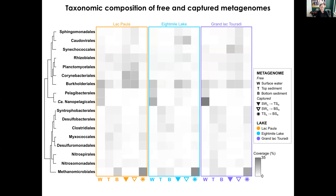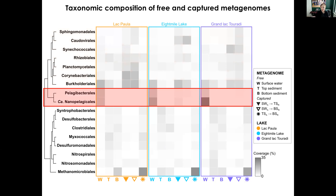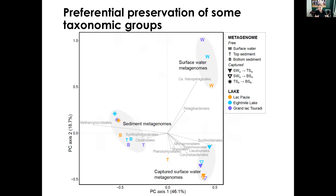Looking at microbial phyla is an extremely low resolution of taxonomic diversity, so we switched to order-rank taxonomic composition. At this finer resolution, groups represented in captured metagenomes include the Caudovirales, which are bacteriophages, and the Burkholderiales, which contain some lineages that are cosmopolitan in lakes. In contrast, ultramicroscopic actinobacteria and alphaproteobacteria are abundant in surface water metagenomes but very lowly covered in sediments and captured metagenomes. An ordination analysis evaluating variation between taxonomic compositions confirmed the preferential preservation of certain groups — namely the Burkholderiales and Caudovirales.